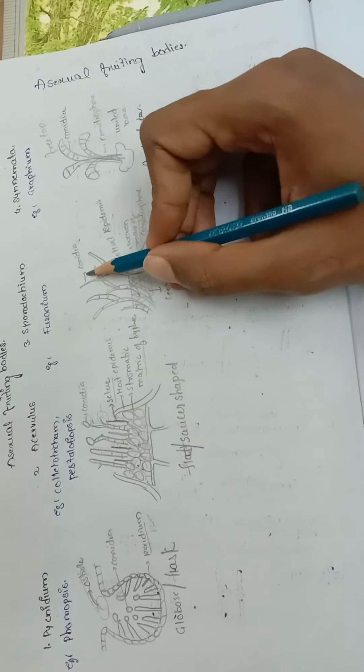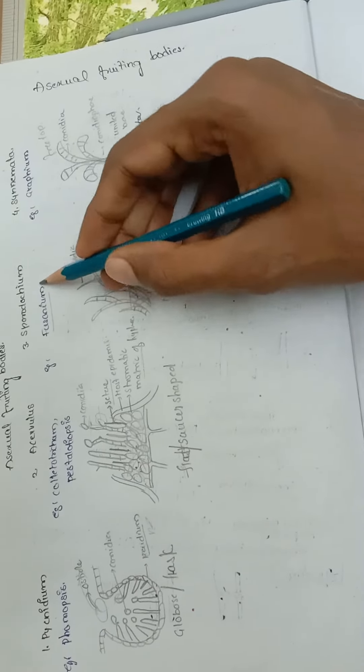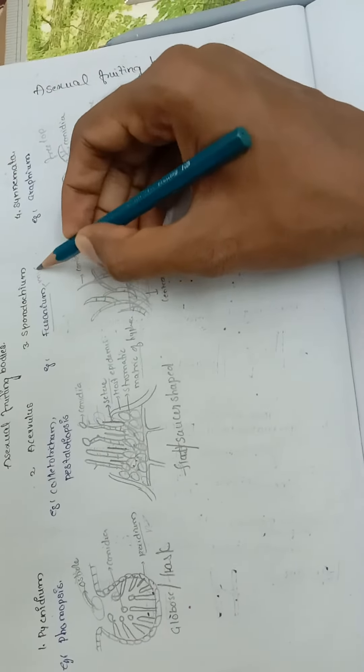An example is Fusarium. Fusarium produces two types of conidia: microconidia and macroconidia, one is sickle-shaped.